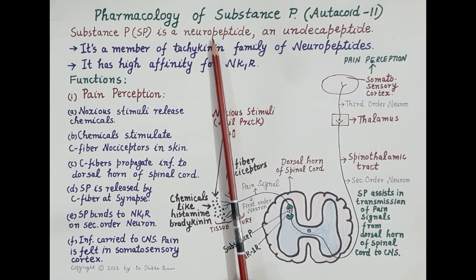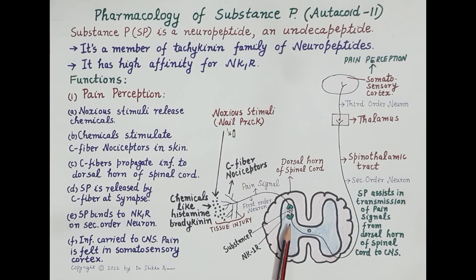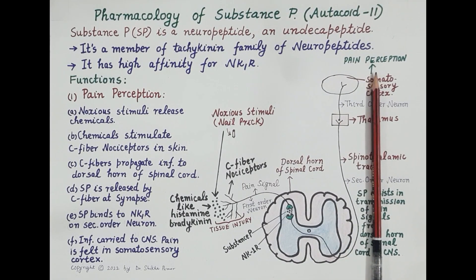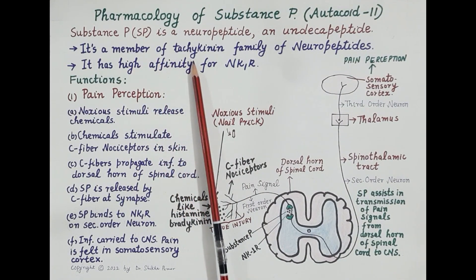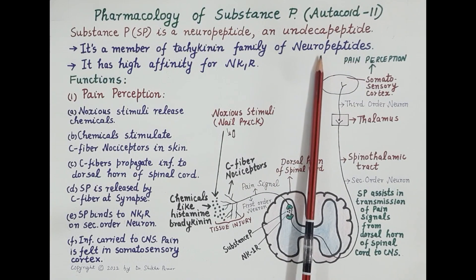Neuropeptides are similar to neurotransmitters. Substance P is released at the synapse, binds to post-synaptic receptors, and produces a response. Substance P is a member of the tachykinin family of neuropeptides.